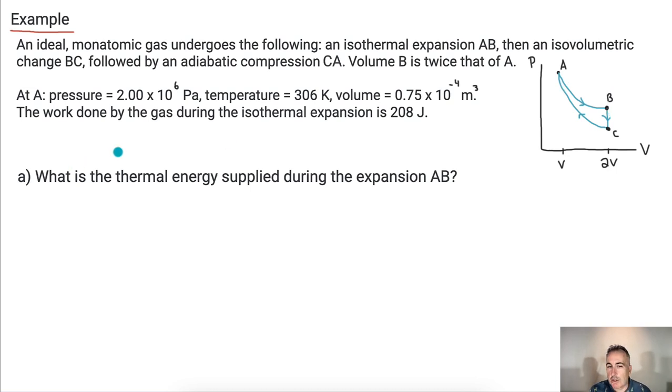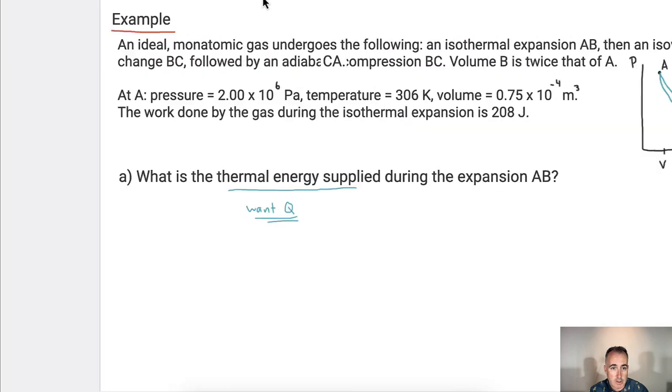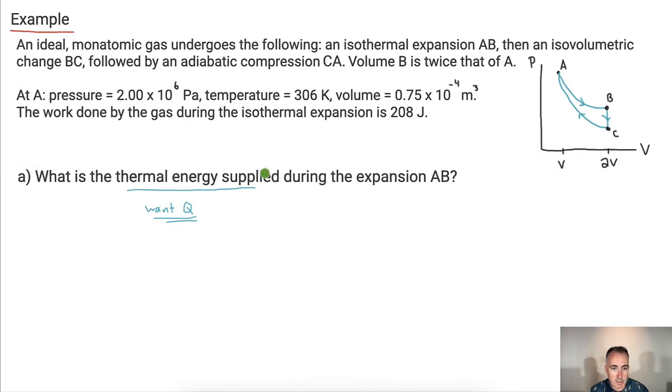Sounds complicated. Let's see what we can do here. So first we're asked what is the thermal energy supplied during the expansion AB? Let's just concentrate on this. What does thermal energy supplied mean? This means we want the letter Q. We just want Q. And how do we find Q? If you're not sure remember it's just delta U plus W. So I'm just going to concentrate on this piece. So I know that Q equals delta U plus W. That means it's the change in internal energy plus the work done. Okay, do I know anything about these?